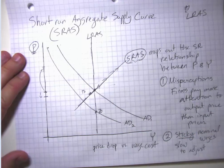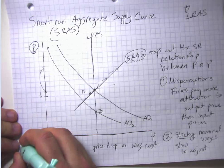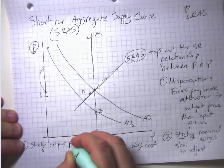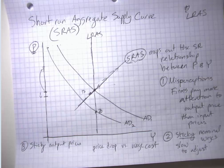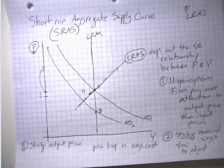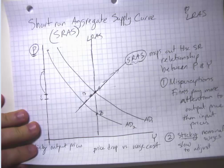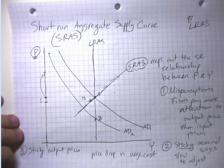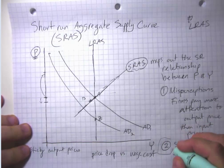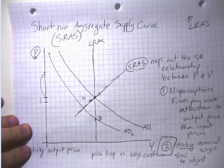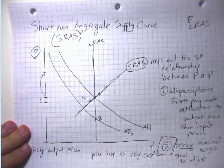So those are the two main explanations. There's also an explanation that is sticky output prices. This story is a little bit harder to tell. It basically relies on half of the firms, say for instance, adjusting their prices at any particular moment, the other half not. And the idea is that the firms that are adjusting their prices adjust their output by more than the firms that don't. That actually gets a little bit tricky and complicated to explain. Mostly I'm actually going to focus on the sticky nominal wage story because it's going to help us explain the adjustment mechanism of how the economy is going to get back to its long run equilibrium.